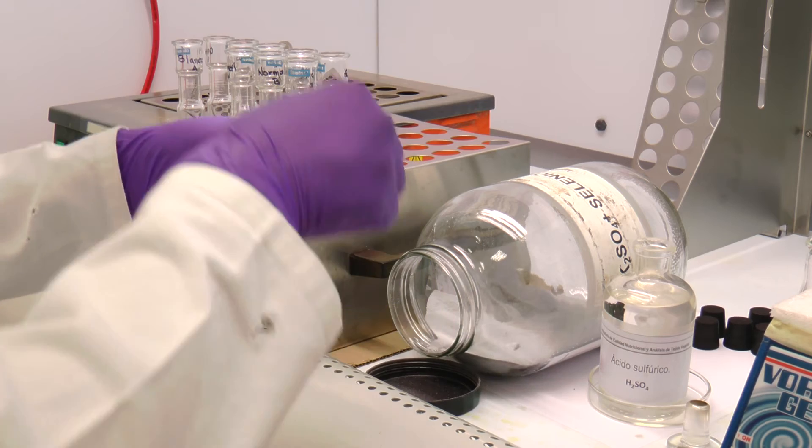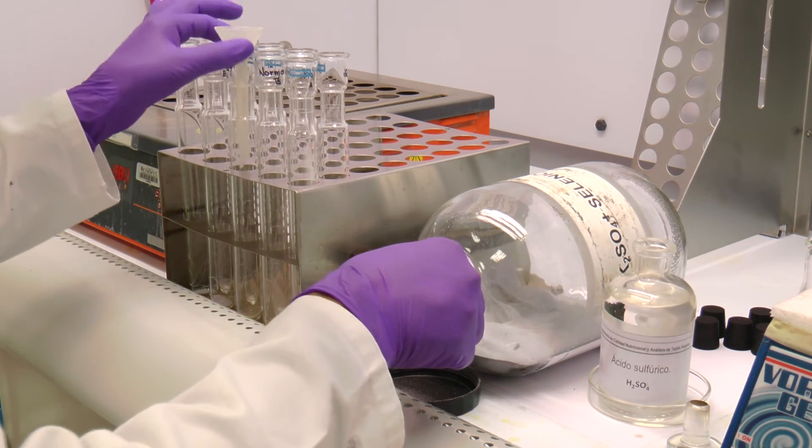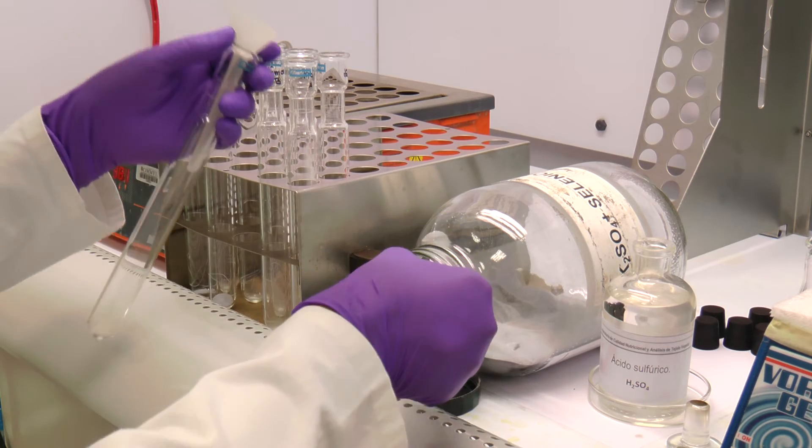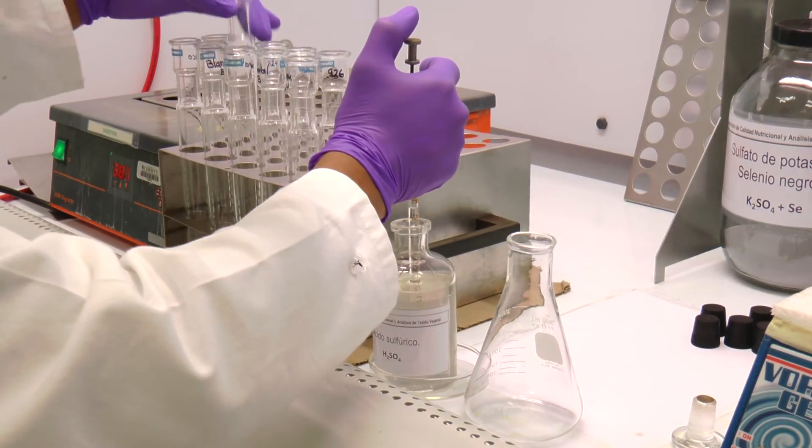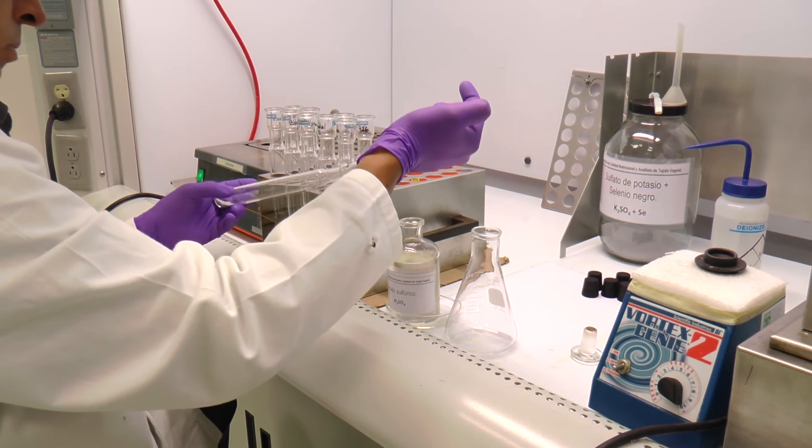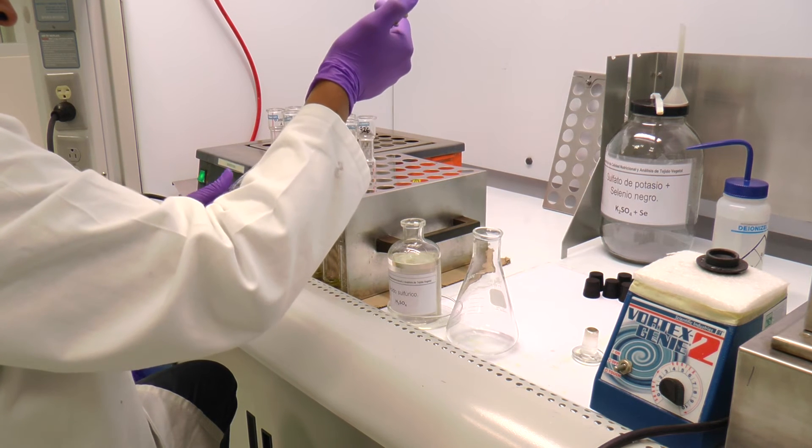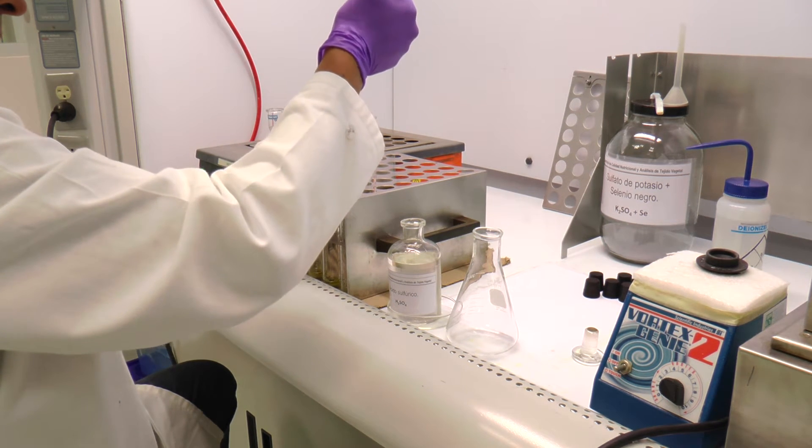Add 2 grams of the catalytic mixture to each tube to help accelerate the digestion process. Then add 2.5 ml of concentrated sulfuric acid, trying to remove the remnants of flour and catalytic mixture that may remain on the sides of the tube.